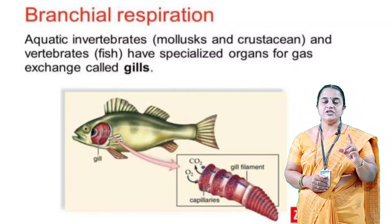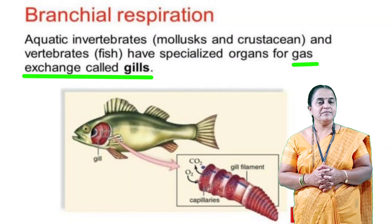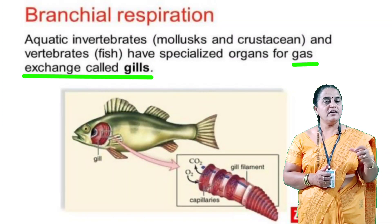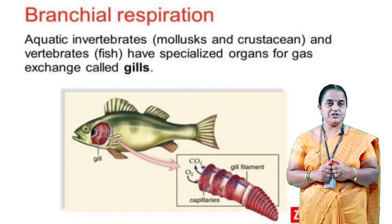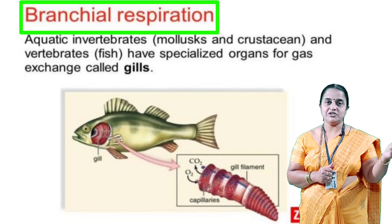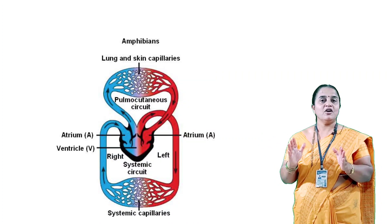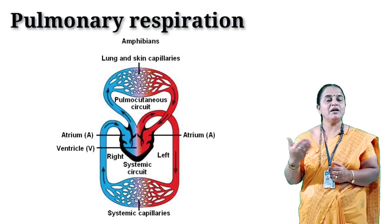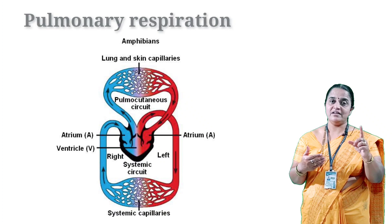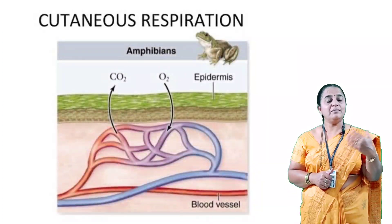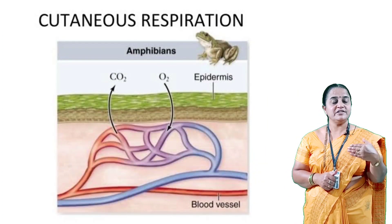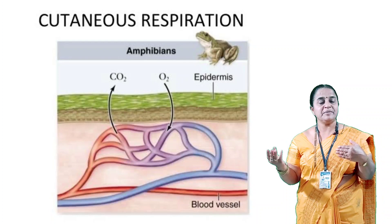Regarding respiration — that is the exchange of gases — in larval life they have gills like fish, so it is branchial respiration. When they attain terrestrial adaptation, the gills close and they develop lungs, giving pulmonary respiration. But still, the skin devoid of scales remains moist, sticky, and slimy, and this skin helps in gaseous exchange — so it is cutaneous respiration.